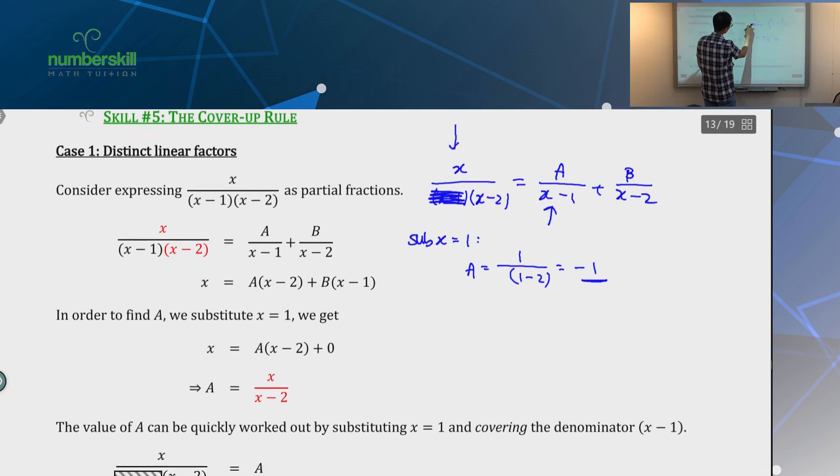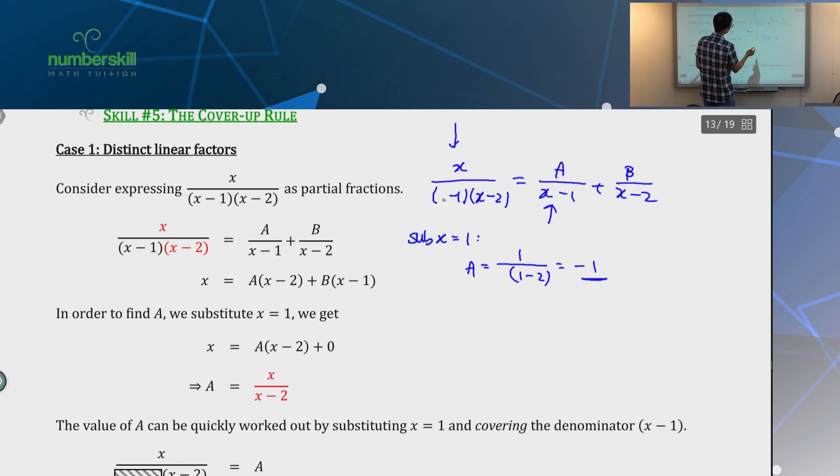Now, how do we do B? If you think about B, if you look at B, repeat the same steps. Look at the denominator, you're going to put in x equal to 2. You're going to put it on the left side again. So, B is equal to 2 over 2 minus 1, which is 1. This one, cover it. You get B equal to 2. Done. So, this is how it looks like when you're applying or you're using it, call the cover-up rule.